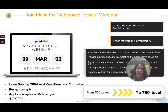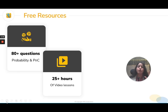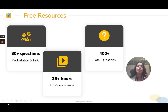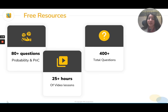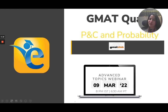All the good stuff does not end there — there are free resources as well. You will get 80-plus questions on just these two topics, P and C and probability. Do the session, gain confidence, and then go back and practice these questions. There are also 25-plus hours of free video lessons, plus 400-plus total questions if you want to go outside these two topics and test yourself on any other topics. And then these sessions that we keep doing for you — seven-plus webinars. Nobody would want to miss all of this, so I'll remind you where to come.